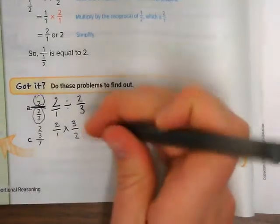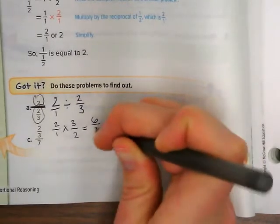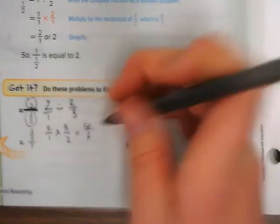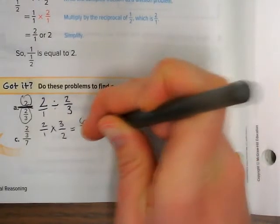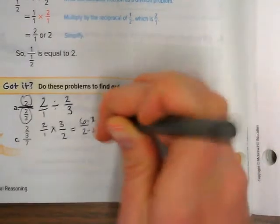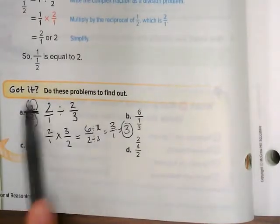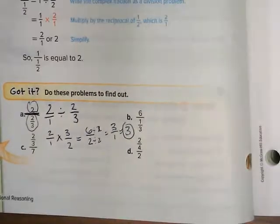Now we can just multiply straight across. 6 over 2, which we can simplify. 6 over 2, divide by 2, divide by 2, which equals 3 over 1, which just equals 3. So we simplified this complex fraction into a regular fraction, or in this case, a whole number.